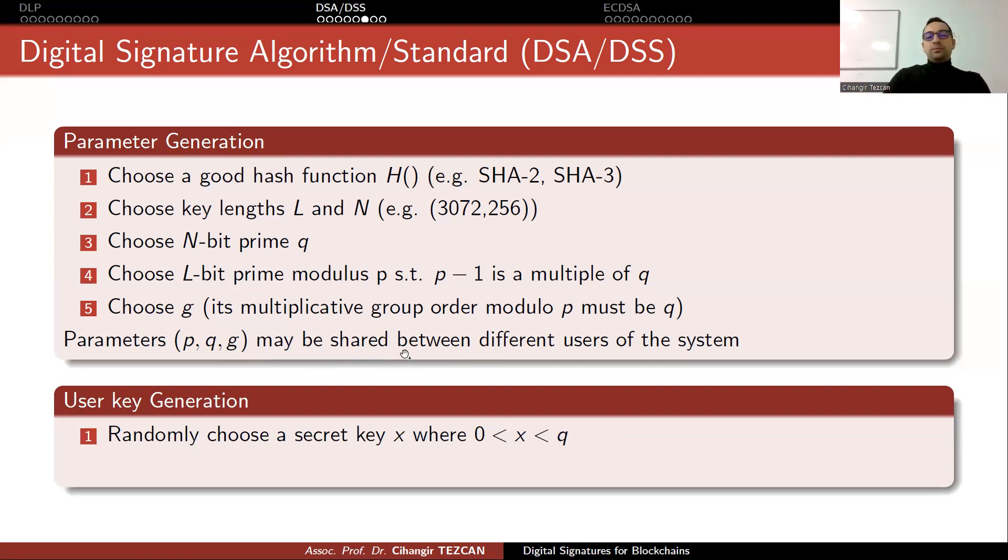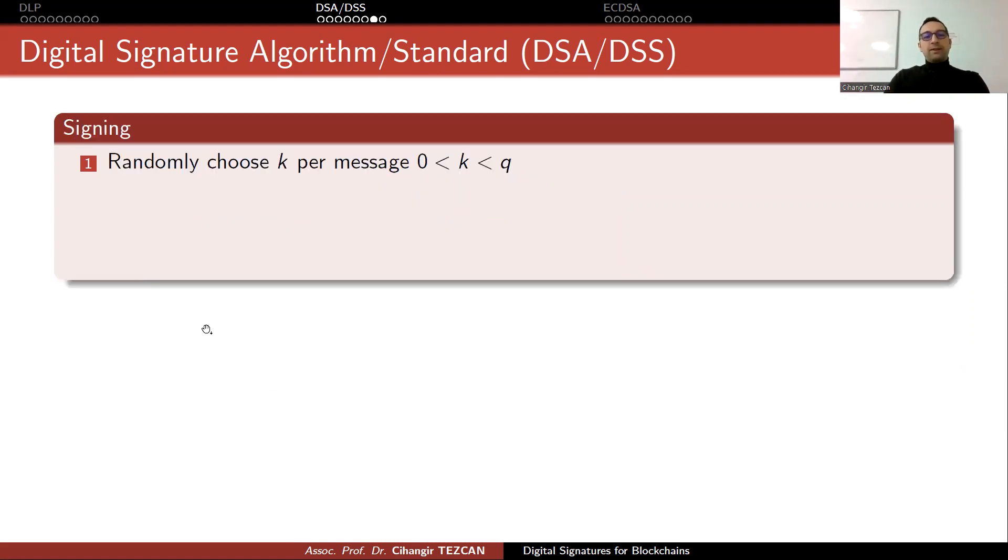Now you created the parameters. Next step is that as a user, you have to create your private and public key. In the cryptocurrency world, this is what you do with your wallet. You create an address. If it were a DSA, this is what you would do. You would randomly choose a secret key X, where X is a number between 0 and Q. Recall that Q is a 256-bit prime if you choose it like this. Then you calculate the public key, which is G to the power of X modulo P. So it is Y. As you can see, this is very similar to ElGamal. If you want to use this algorithm in your cryptocurrency, this Y would be your wallet address. Of course, in practice, this would be large, so you would hash it and so on to make it smaller.